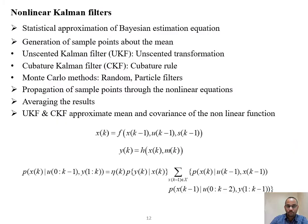Nonlinear Kalman filters avoid the linearization inherent in the extended Kalman filter, which itself introduces errors. By using nonlinear Kalman filters those errors can be reduced. The unscented Kalman filter is widely used, and the cubature Kalman filter has also become very widely used. In all these nonlinear Kalman filters, sample points are propagated through the nonlinear equations themselves, making estimation more accurate.